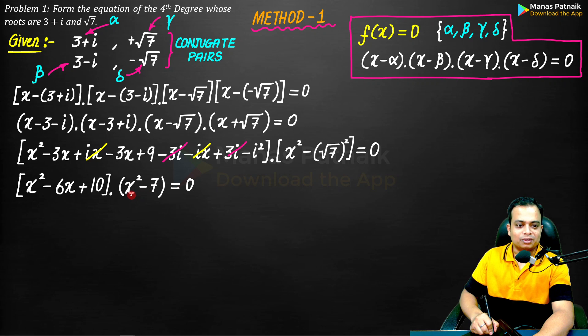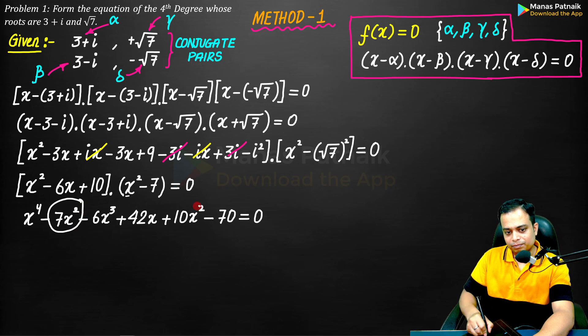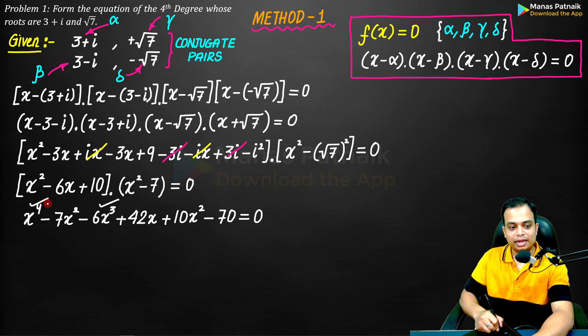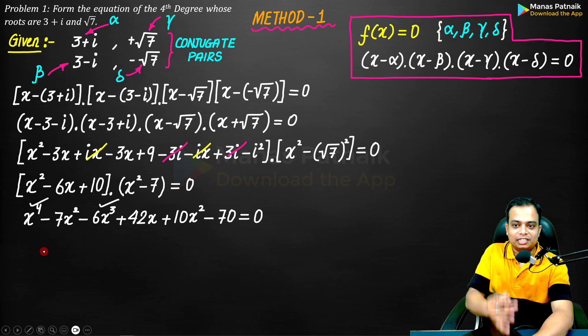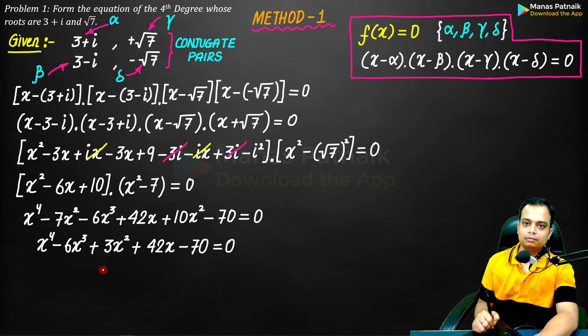So the result is very simple: x square minus 6x plus 10, and then this is x square minus 7. Do the simplification process - simplify it further. This is what you get. If you watch, minus 7x square plus 10x square is going to be minus 3x square, but before that you've got an x cube term and x to the power 4. So let me write the final algebraic equation of fourth degree: x to the power 4 minus 6x cube minus 3x square plus 42x minus 70 equals 0.